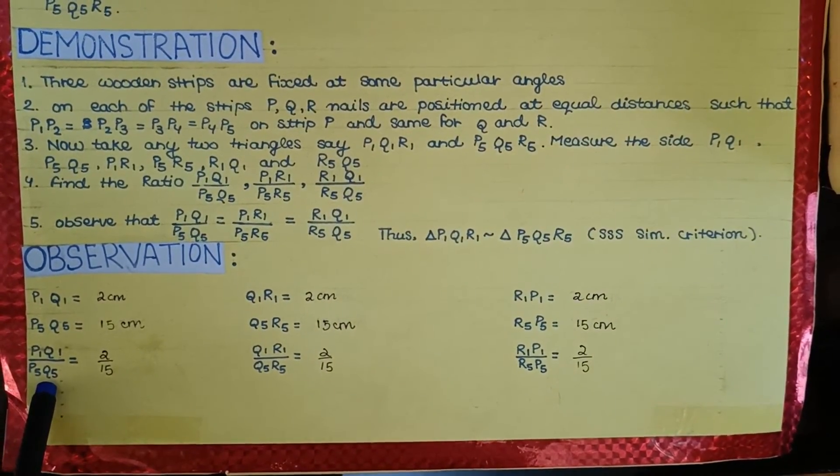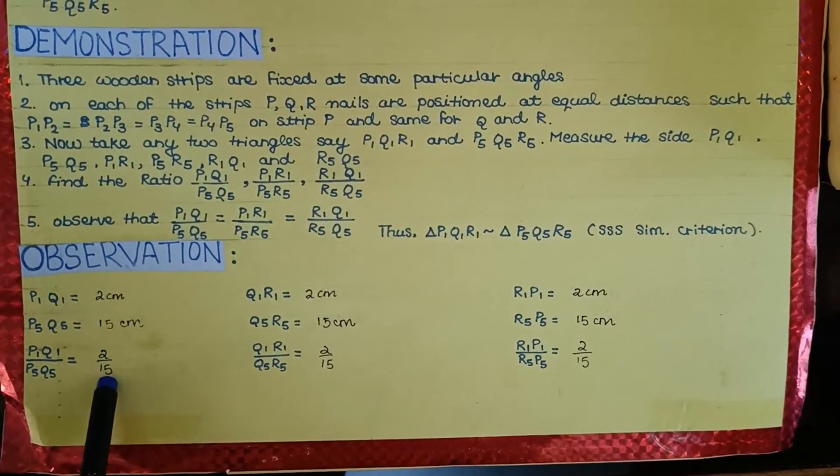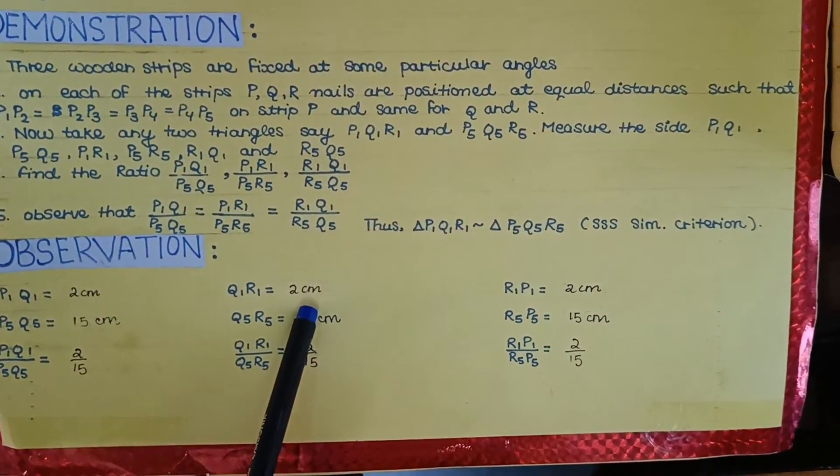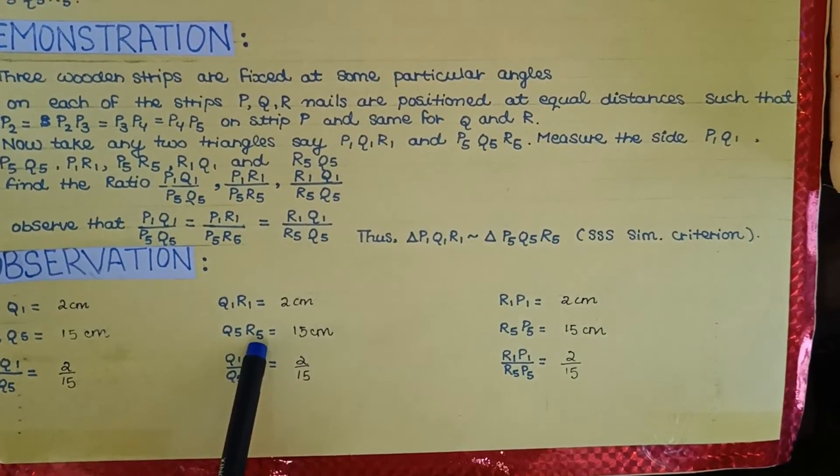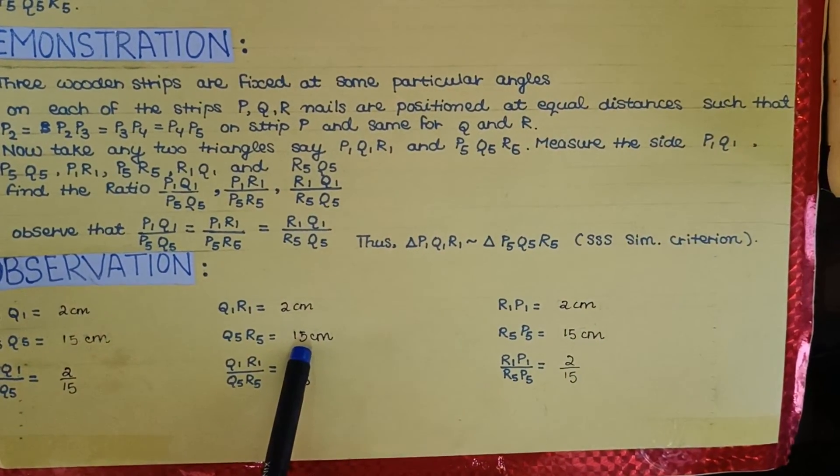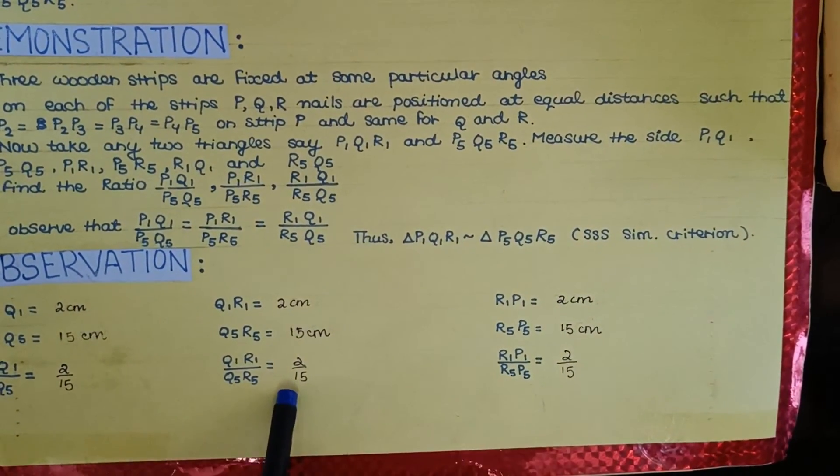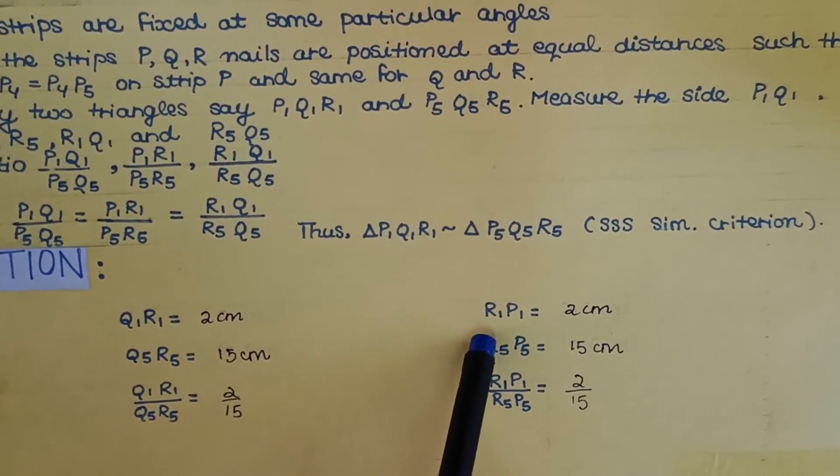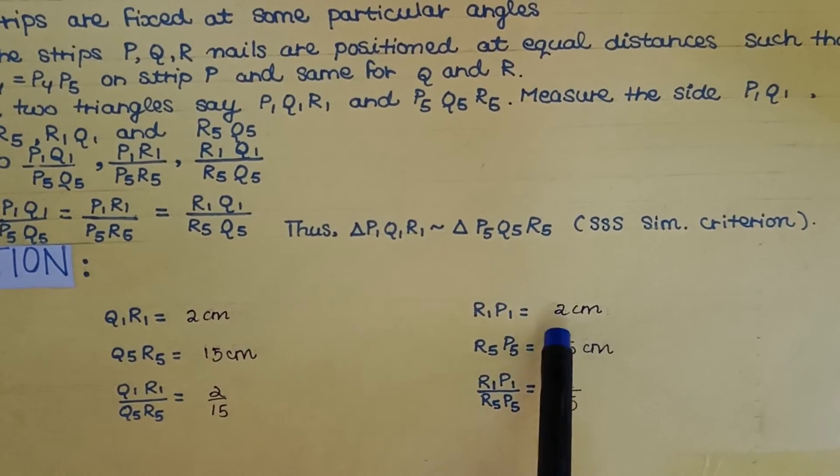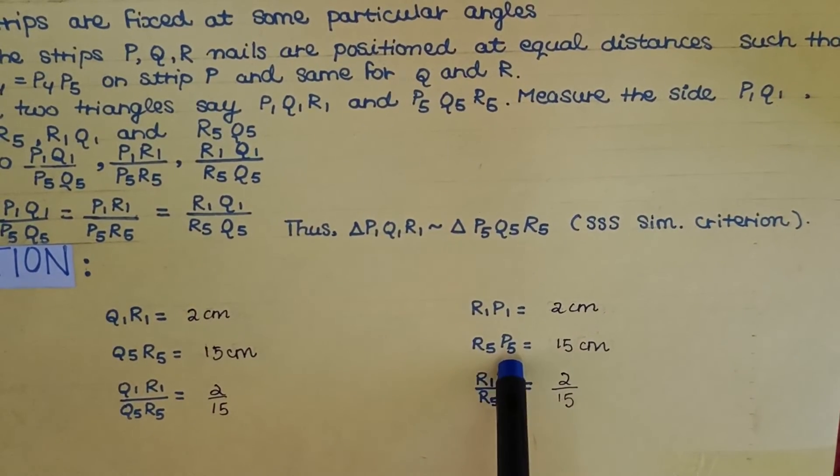Side Q1R1 is equal to 2 centimeters, side Q5R5 is equal to 15 centimeters, so Q1R1 upon Q5R5 is equal to 2 upon 15. Side R1P1 is equal to 2 centimeters and R5P5 is equal to 15 centimeters, so R1P1 upon R5P5 is equal to 2 upon 15.